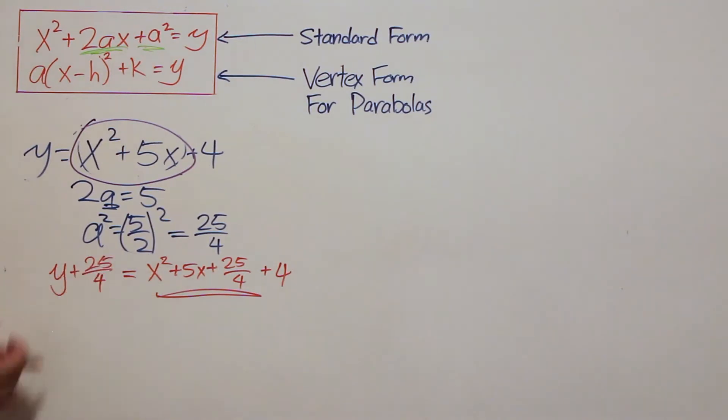With the x squared plus 5x plus 25 over 4 section, we have a perfect square, even though it may not look too nice. We get y plus 25 over 4 equals quantity x plus 5 halves squared.